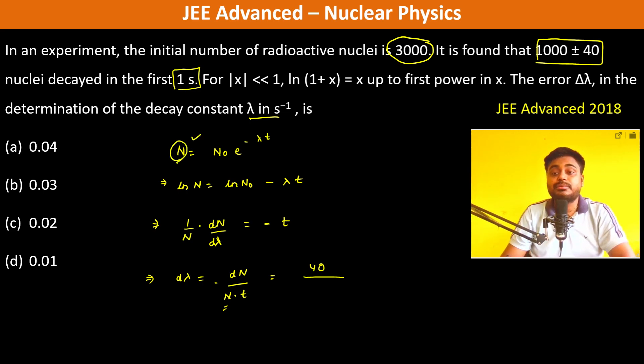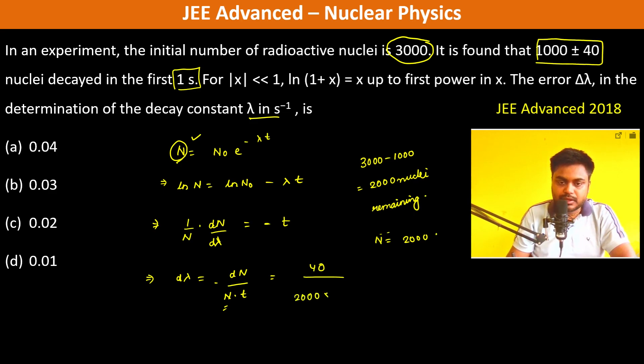nuclei remaining. Since 1000 decayed, 3000 - 1000 = 2000 nuclei are remaining. Therefore N = 2000. So we have 40/(2000 × 1)